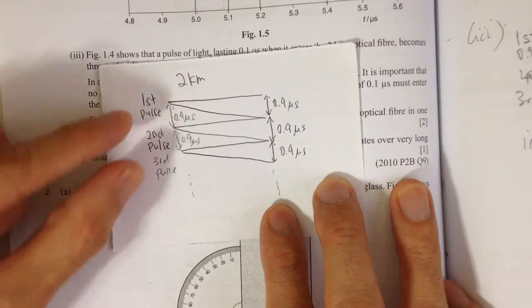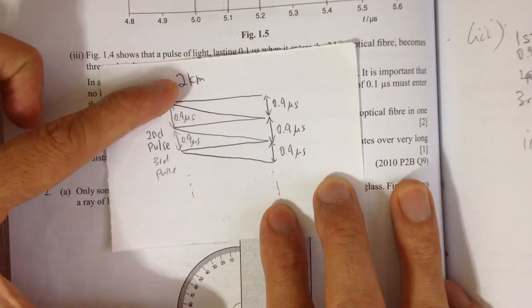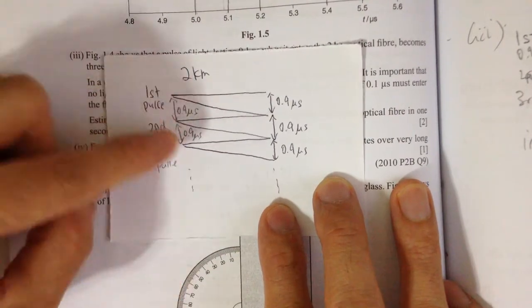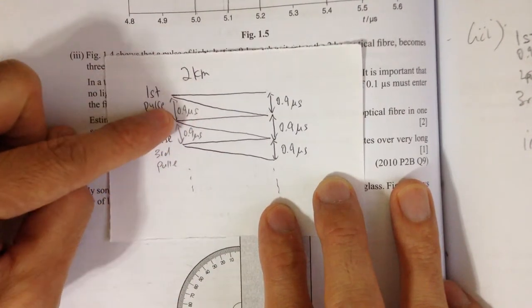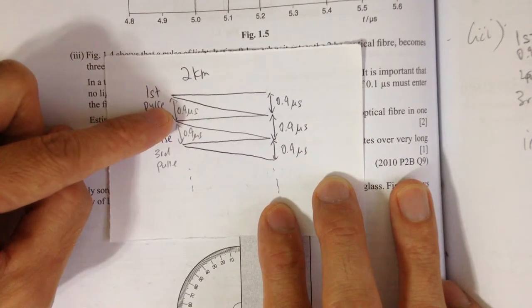So imagine each one is 0.9. So in one second, how many 0.9 microseconds are there? So that will be the number of pulses you can put in one second.